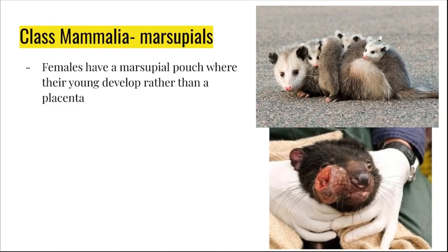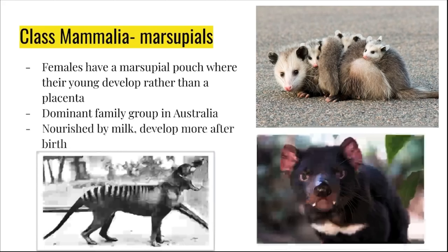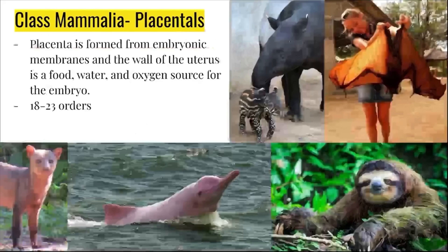Marsupials are mammals that have a pouch where their young develop rather than a placenta. Marsupials are a dominant family group in Australia. Marsupial young are nourished by milk, and the young develop more after birth. On the bottom left you can see a thylacine, the Tasmanian wolf — this species only went extinct recently, and some people believe there are still undetected individuals. On the bottom right is a Tasmanian devil. The last group of mammals we'll discuss are the placental mammals. There are roughly 18 to 23 different orders of placental mammals, including us. Here you can see a broad diversity including a rare short-eared dog, a freshwater pink dolphin from the Amazon River, a flying fox, a sloth, and a tapir with its young.